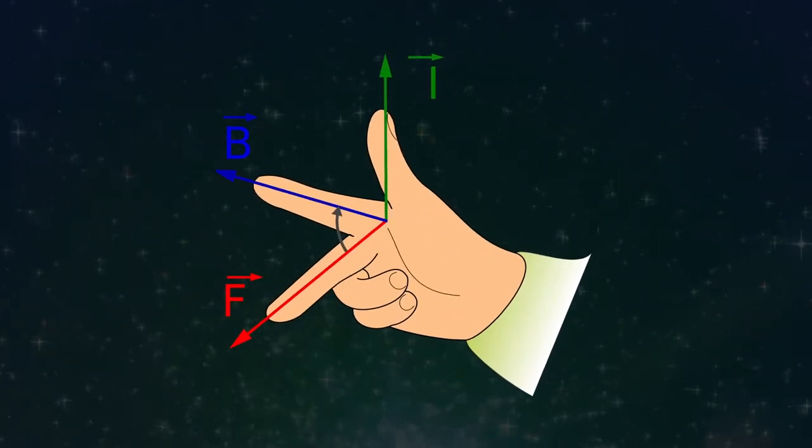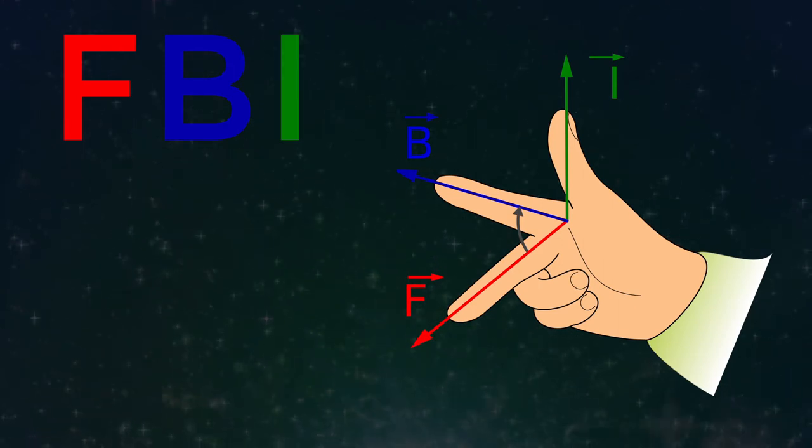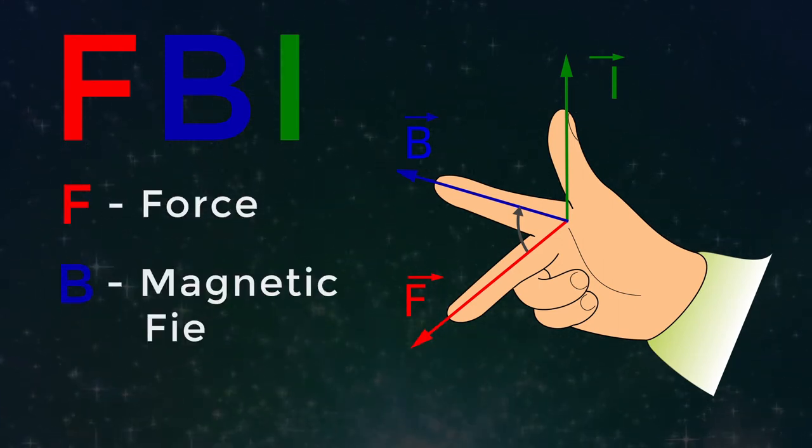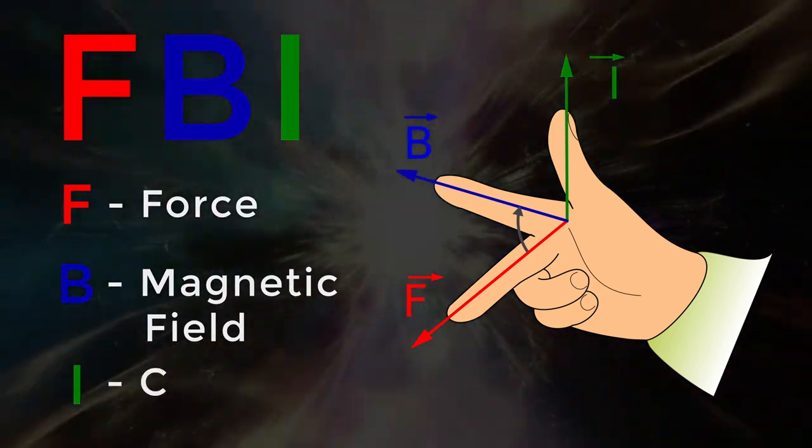The bolded letters in the directions above give a mnemonic way to remember the order. Another mnemonic for remembering the rule is the initialism FBI, which stands for Force or motion, B for the magnetic field, and I for current.